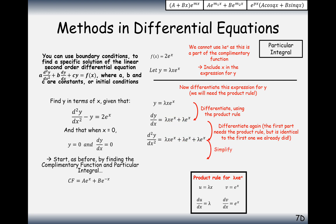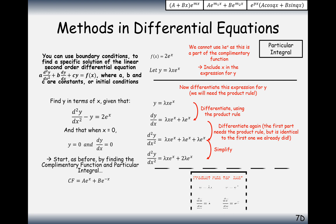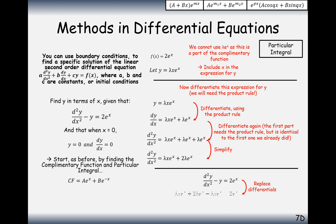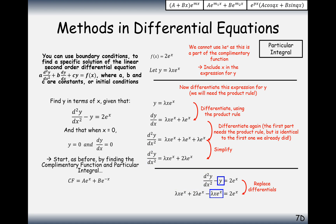That leads to a total second derivative of lambda·x·e to the x plus 2 lambda·e to the x, after simplifying the back terms. Now we plug everything into the differential equation. The lambda·x·e to the x terms cancel out, leaving 2 lambda equals 2, so lambda equals 1. The other terms cancel out as well, so lambda is 1.